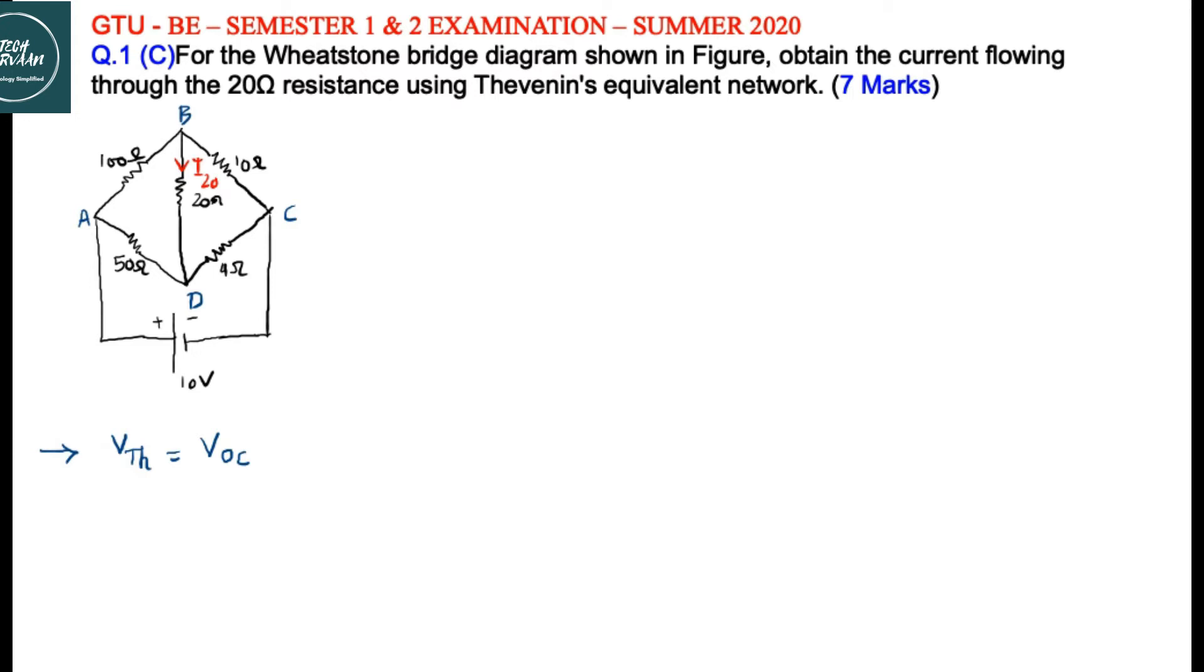It would look like this: 100 ohm resistor in series with 10 ohm resistor, 50 ohm resistor in series with 4 ohm resistor. This is our terminal B, A, supply voltage 10 volt, and D. What we want to find is VTH. We open circuit at BD, so we can find voltage across the open circuit.